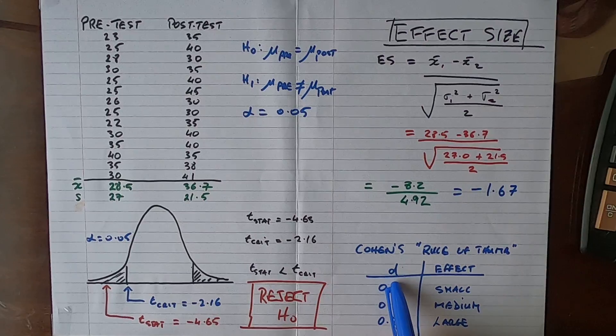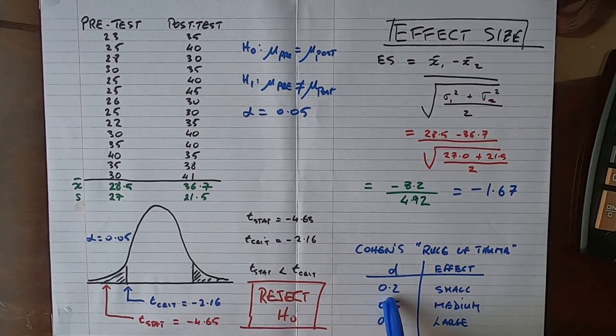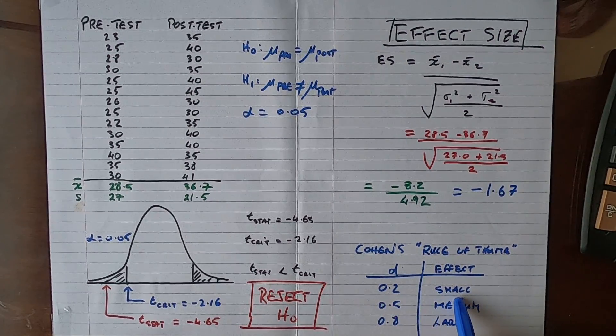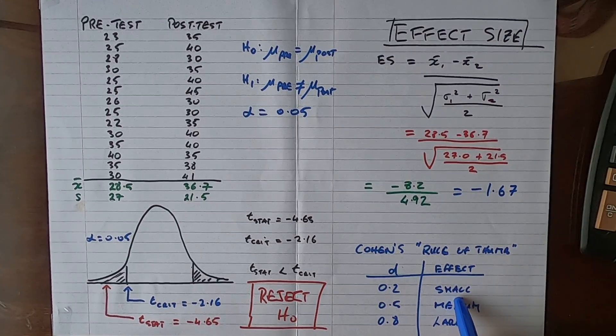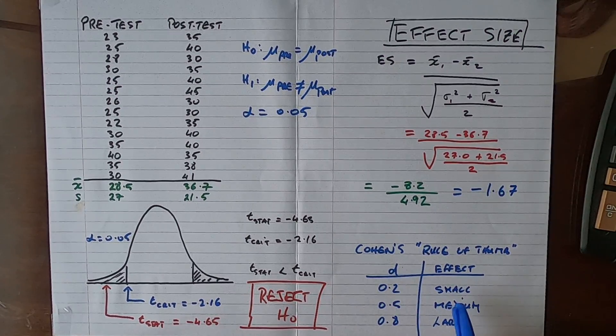He used the measure Cohen's d as a measure of effect size. If the value was 0.2, we had a small effect. In other words, you would have found a difference, but it would not be a very meaningful or significant difference.